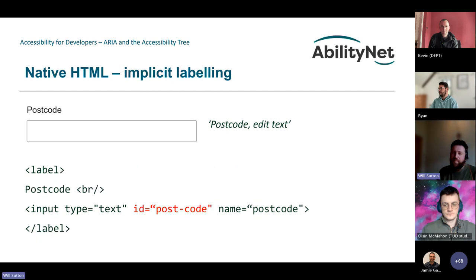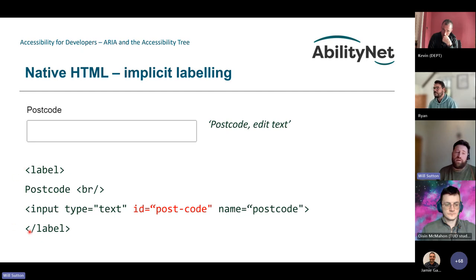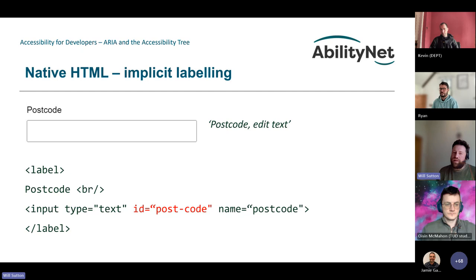You can also label implicitly — useful when you don't have much control, such as in a CMS-driven website. Implicit labeling nests both the label text and the input inside a label element. It's not quite as well supported as explicit labeling, but it's a good option if explicit labeling isn't available.